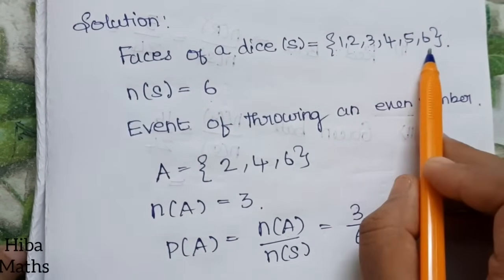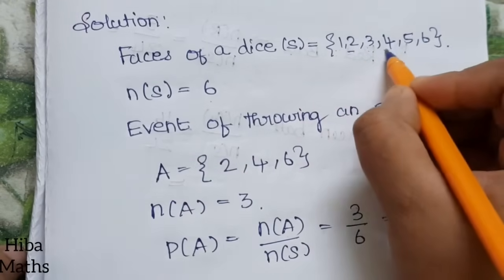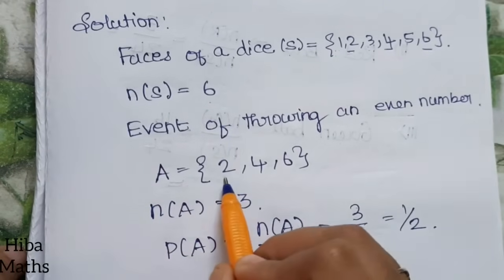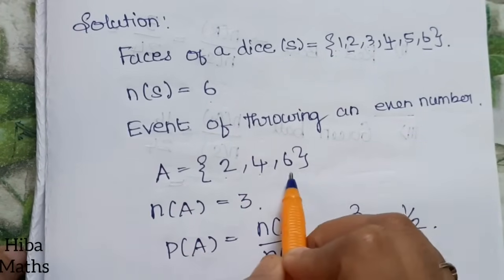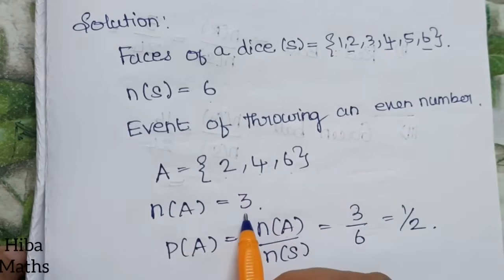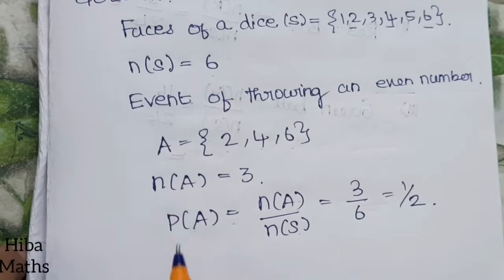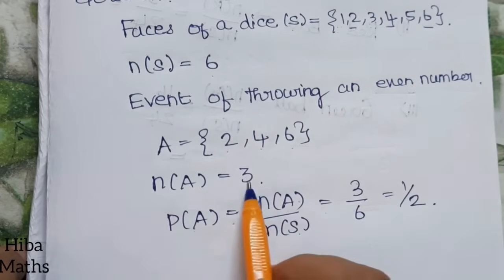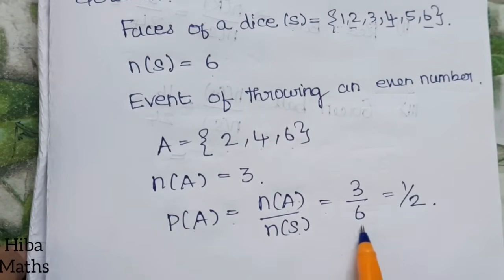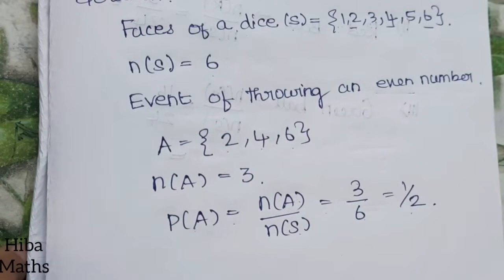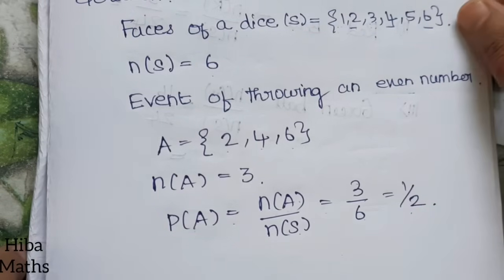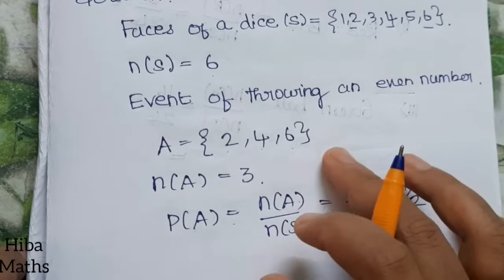Even numbers are 2, 4, 6, so A equals {2, 4, 6} and n of A equals 3. Probability of A equals n of A by n of S equals 3 by 6, which simplifies to 1 by 2.